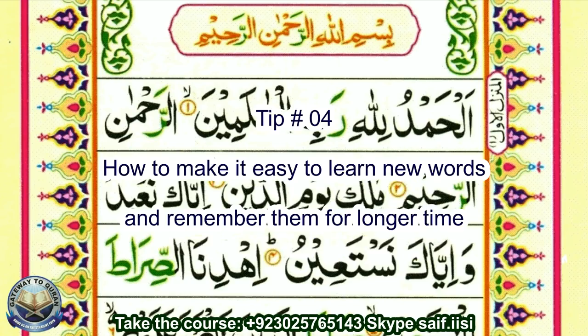Tip number four: for new vocabulary words, there are a couple of ways to remember them. One very common way is repetition — repeat the word with its meaning a couple of times, focusing on how it is written in the Quran. Then repeat it at different times, not all at once. After two or three hours, spare some time and repeat them again. The next morning repeat them, and again when you come back from school. Don't spend one full hour memorizing — spread it out over short sessions.